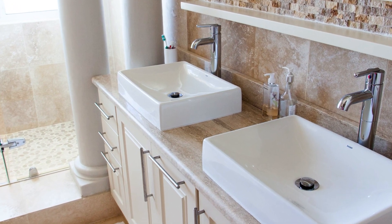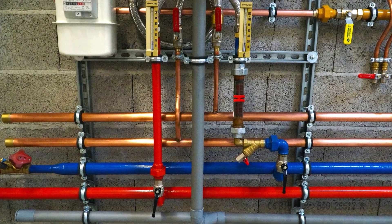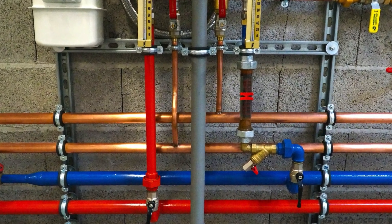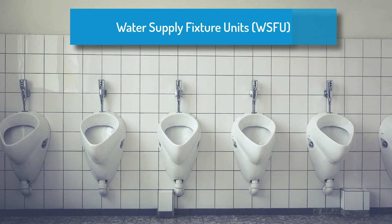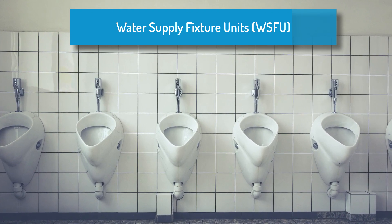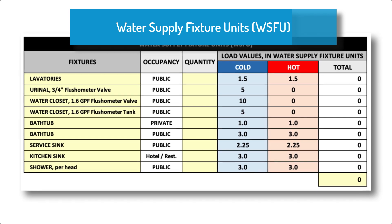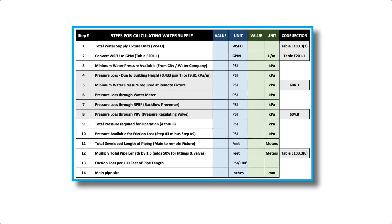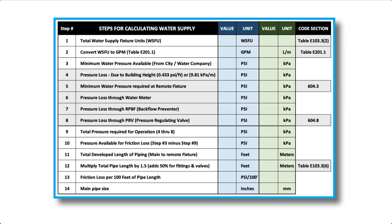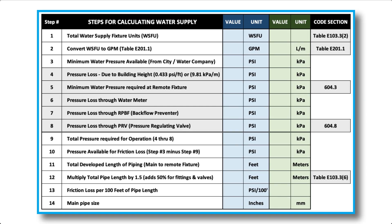Plumbing codes use various methods to determine the size of the water piping feeding a building. One of those methods is to use fixture units. To figure water supply fixture units, you need to calculate the demand load that plumbing fixtures will place on a water supply system. Here are the steps required to size domestic water mains and distribution piping, along with how to determine fixture units and the volume of water required.